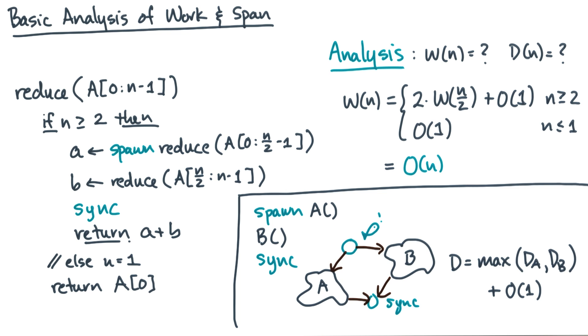Mathematically, we say the span is the maximum of the span going through A versus the span going through B. Now for our divide and conquer reduction, the span only depends on the problem size n. And the recursive calls solve problems of roughly equal size.